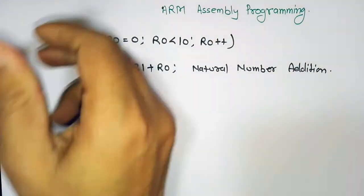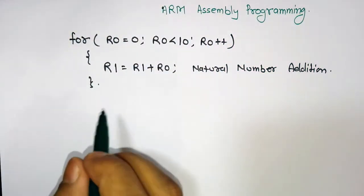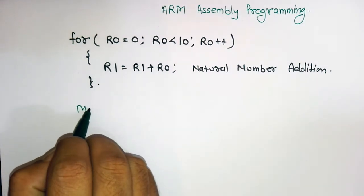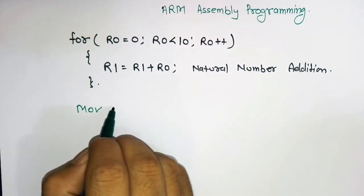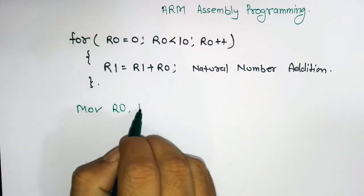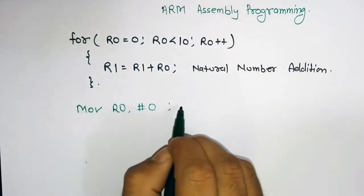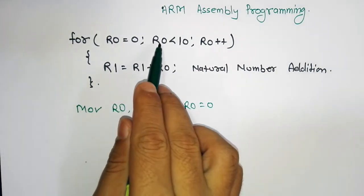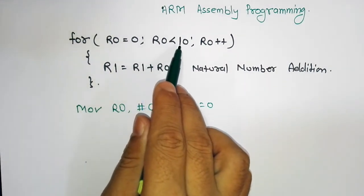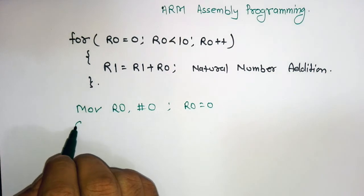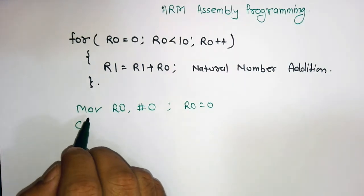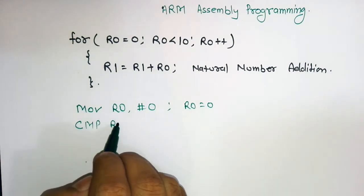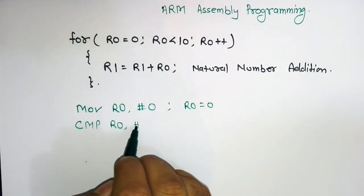In our ARM assembly program, first we have to load R0 with the value 0, so here we write MOV R0, 0. By 'loop' it simply means R0 is equal to 0. Then we check whether R0 is less than 10 or not, so we write CMP R0, 10.